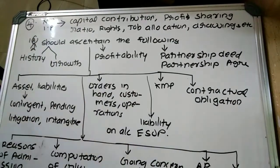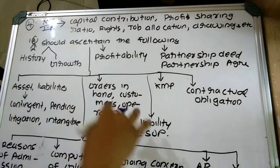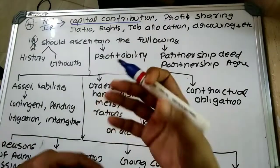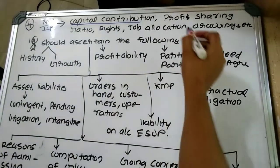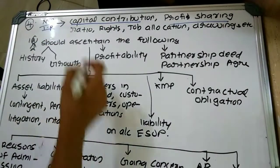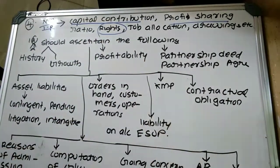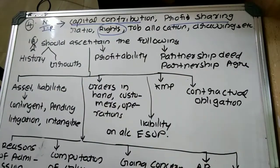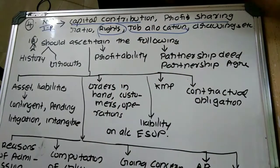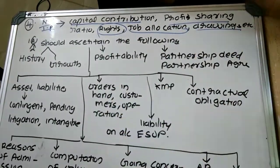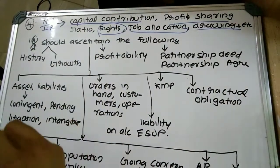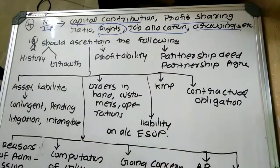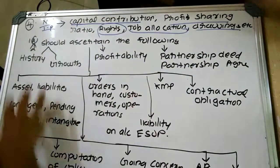The new partner or incoming partner (NPIP) will be mainly interested to know about capital contribution—how much capital to be contributed, how much profit will be obtained, what are the rights and responsibilities, which jobs will be allocated, and can they make appropriate drawings. These questions normally come into the mind of a person who is going to be appointed as a partner of a firm. So he is appointing an investigating accountant for the purpose of obtaining this information.